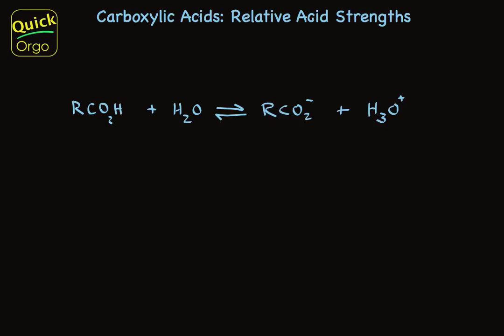The pKa of acetic acid is 4.7, but not all carboxylic acids have that 4.7 pKa. The actual acid strength is dependent on what that R group is.